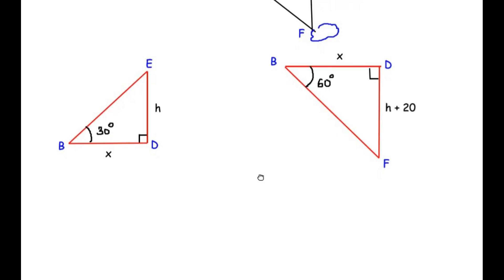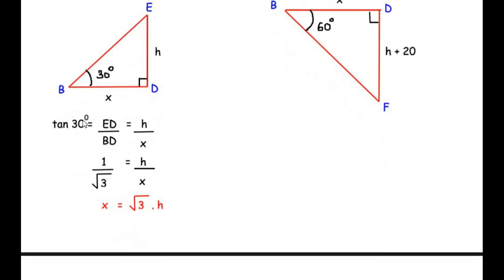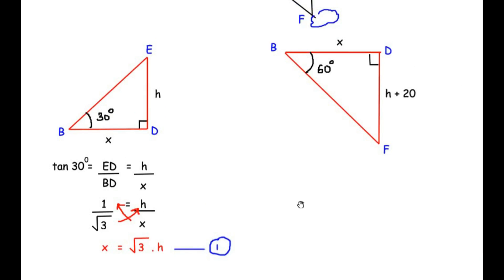For triangle BDF, tan 60° = DF/BD gives √3 = (h + 20)/x. Substituting x = √3·h from equation 1: √3 × √3·h = h + 20, so 3h = h + 20. Gathering like terms: 3h − h = 20, giving 2h = 20, so h = 10 meters.